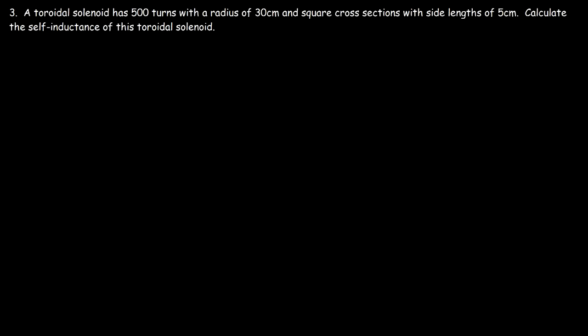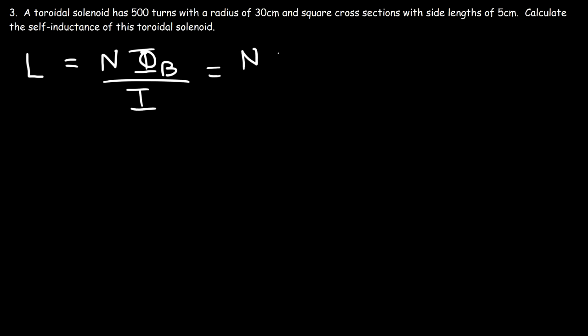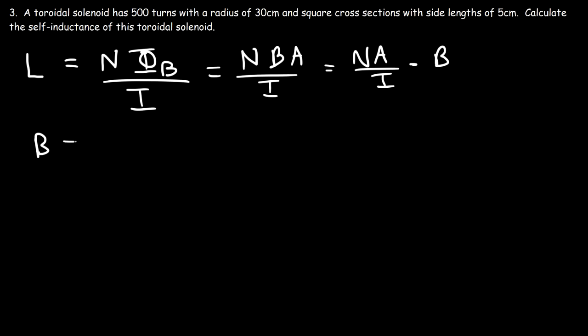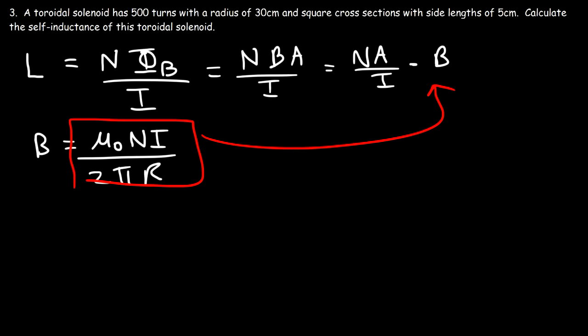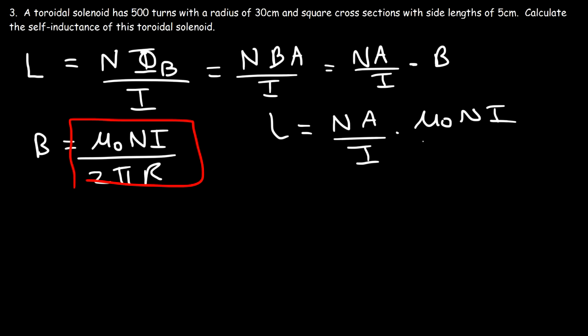A toroidal solenoid has 500 turns with a radius of 30 centimeters and square cross-sections with side lengths of 5 centimeters. Calculate the self-inductance. L equals N times the magnetic flux divided by current, and since flux equals B times A, this becomes N times A over I times B. The magnetic field of a toroidal solenoid is mu-zero N I divided by 2 pi R. Substituting and canceling I gives L equals mu-zero N squared times A divided by 2 pi R.